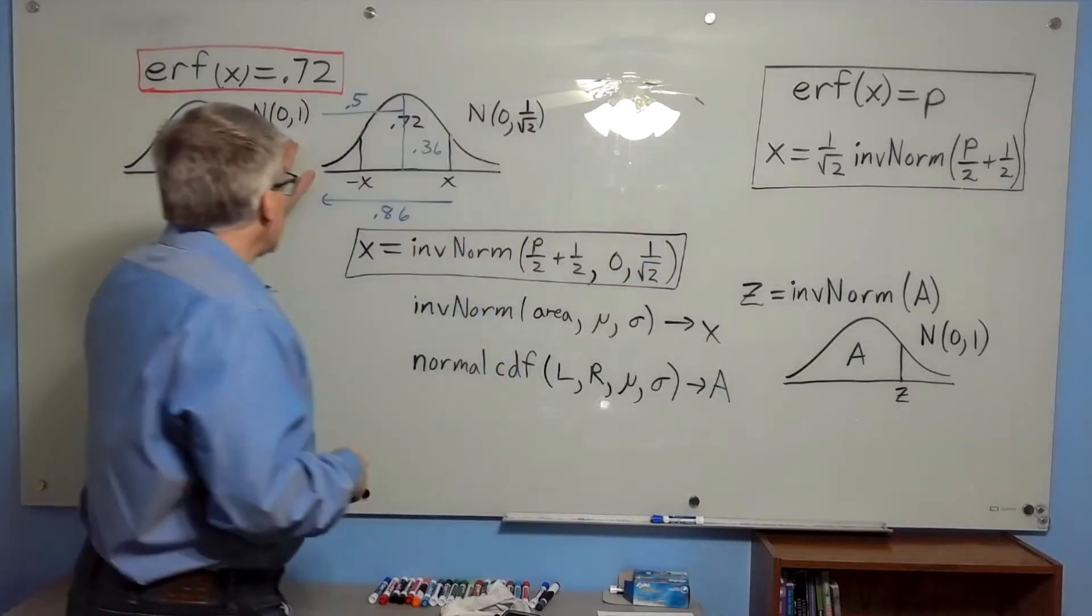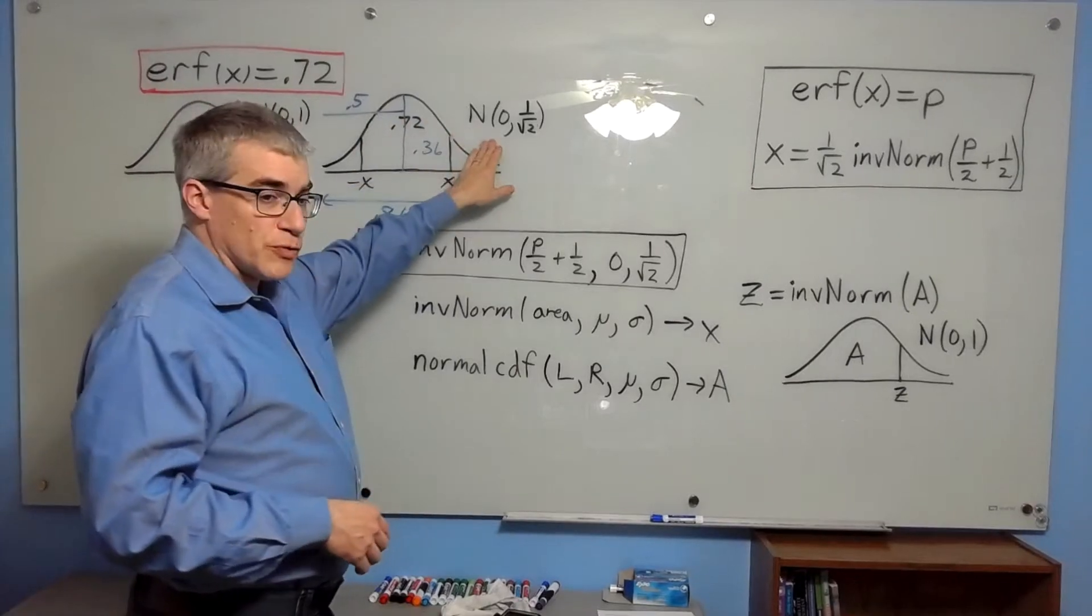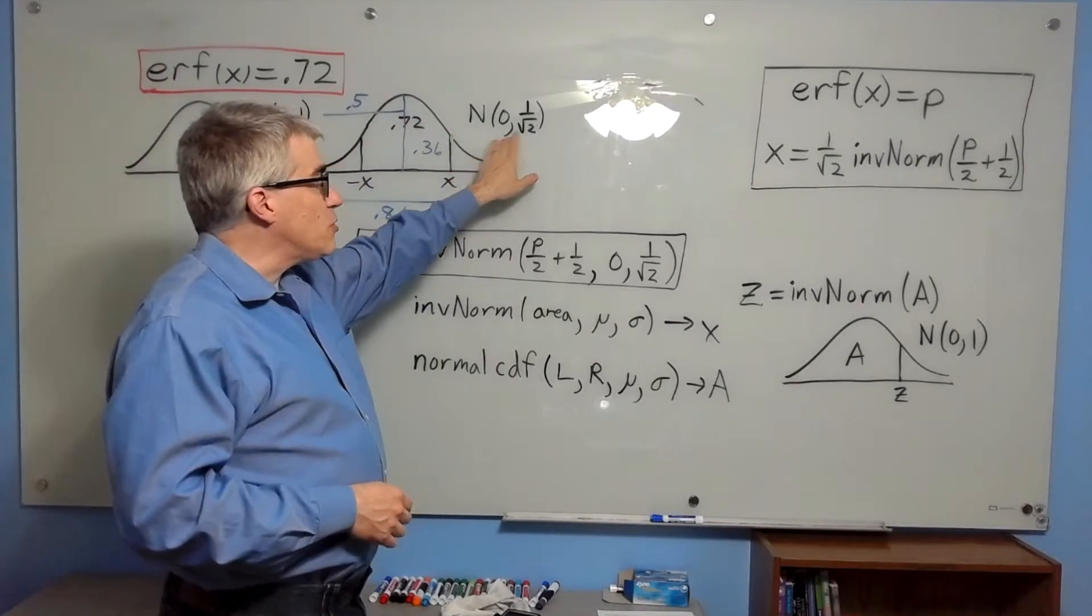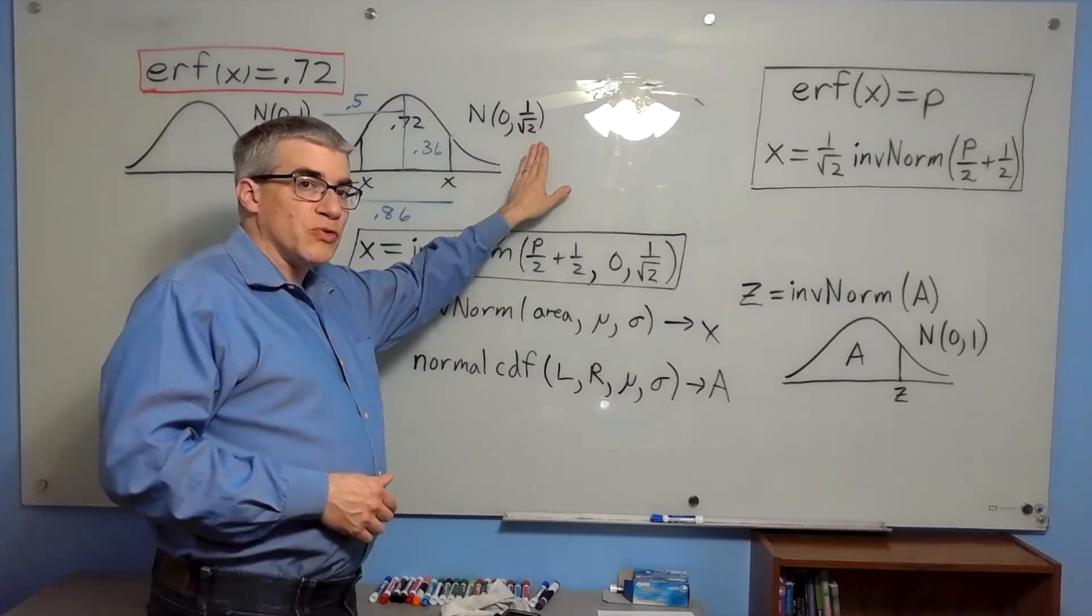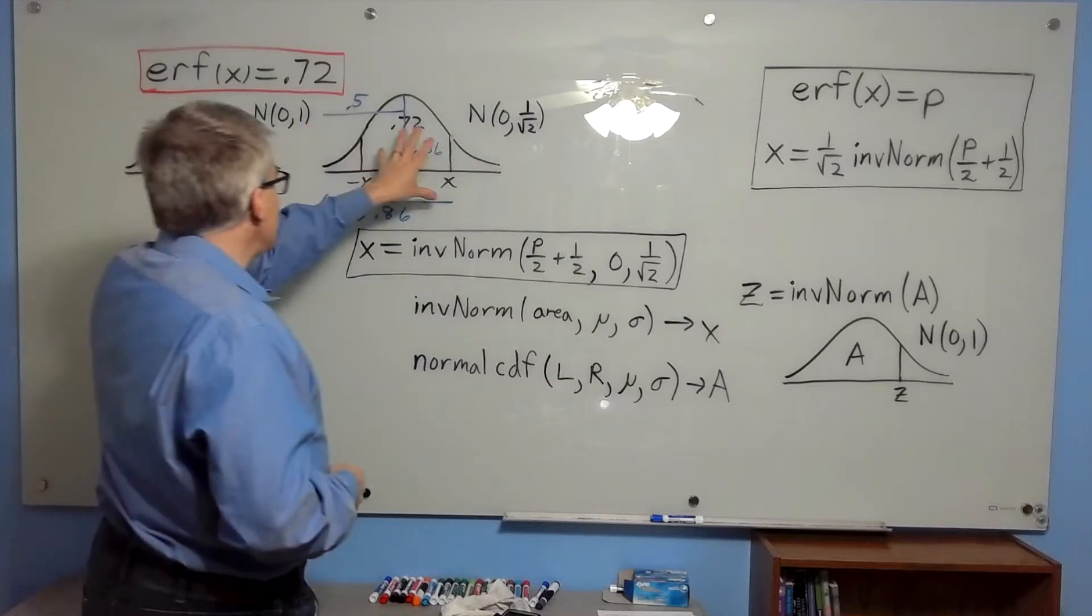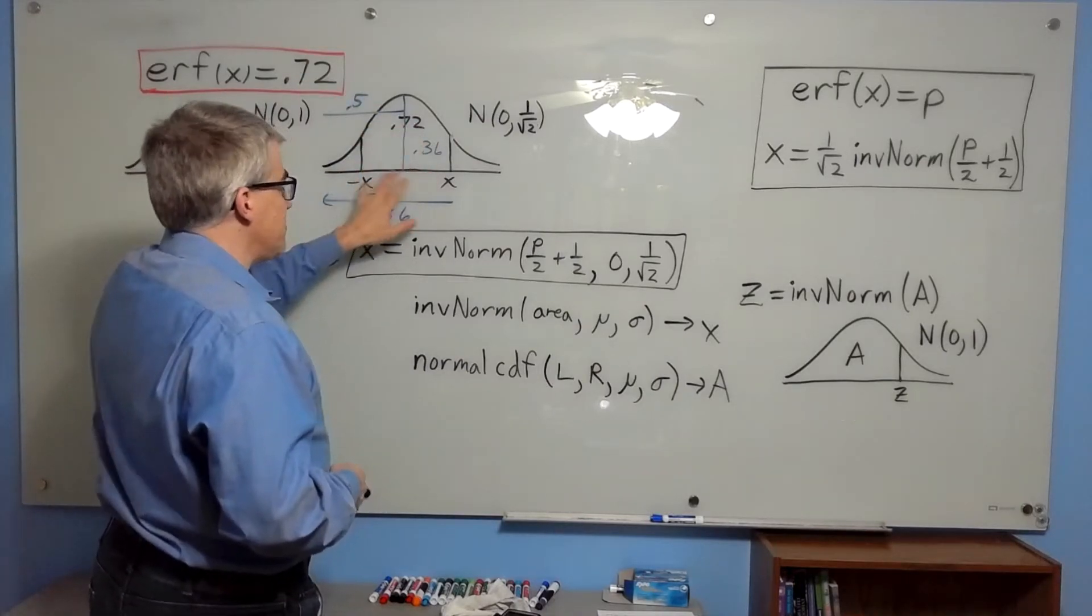It turns out that the error function is essentially defined on a normal curve, not a standard normal. This is a normal distribution with a mean of zero, but a standard deviation of 1 over the square root of 2. And it's defined so that this output is the area between negative x and x.